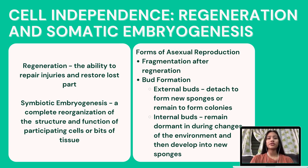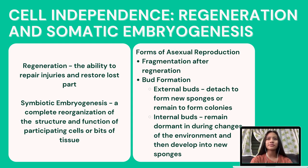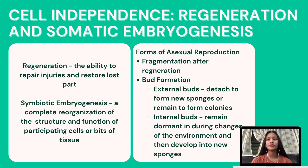Cell independence, regeneration, and somatic embryogenesis. Sponges have a tremendous ability to repair injuries and restore lost parts — this process is called regeneration. Regeneration only applies to the wounded portion of the sponge. A complete reorganization of the structure and function of participating cells or bits of tissue is somatic embryogenesis, which allows them to change their shape or function as they develop into a new organism. Fragmentation is when a sponge breaks into parts each capable of becoming a new sponge. Fragmentation after regeneration is one form of asexual reproduction in sponges. The other form of asexual reproduction is bud formation.